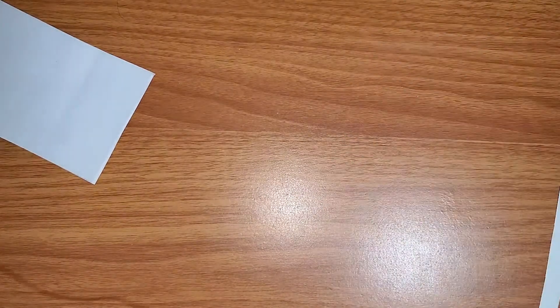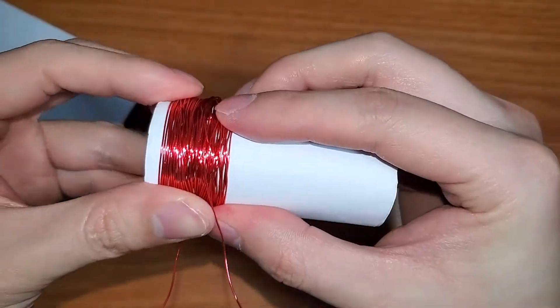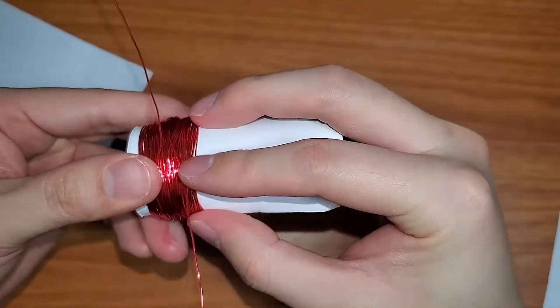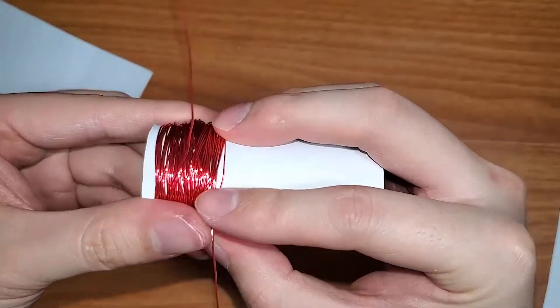And in order to keep this in place, right, because you see the wire is still kind of going to come apart, we're going to take a hot glue gun and we're going to tape it, put it all together.